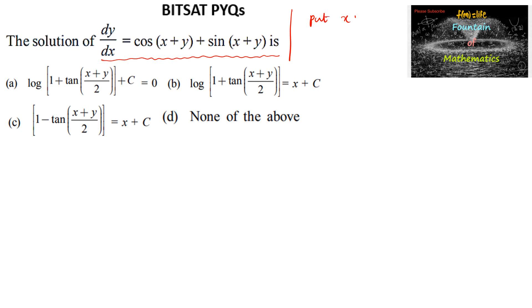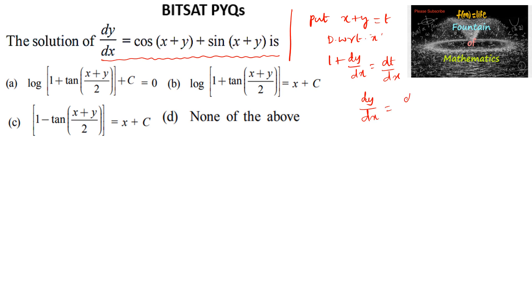Put x+y equal to t. Differentiating with respect to x, we get 1 + dy/dx = dt/dx, or we can write dy/dx = dt/dx minus 1.